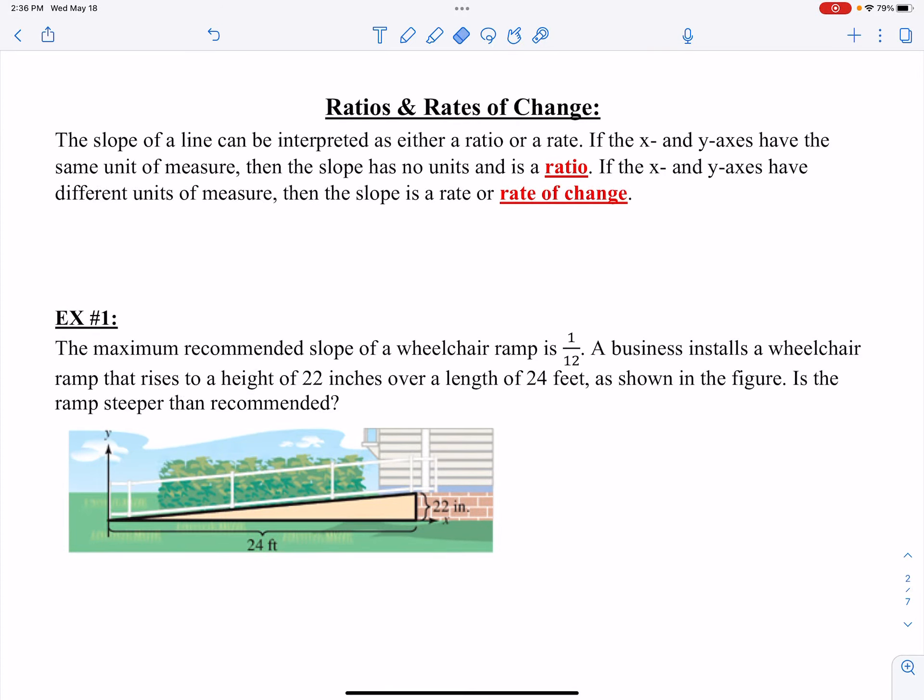The slope of a line can be interpreted as either a ratio or a rate. If the x and y-axes have the same unit of measure, then the slope has no units and is a ratio.